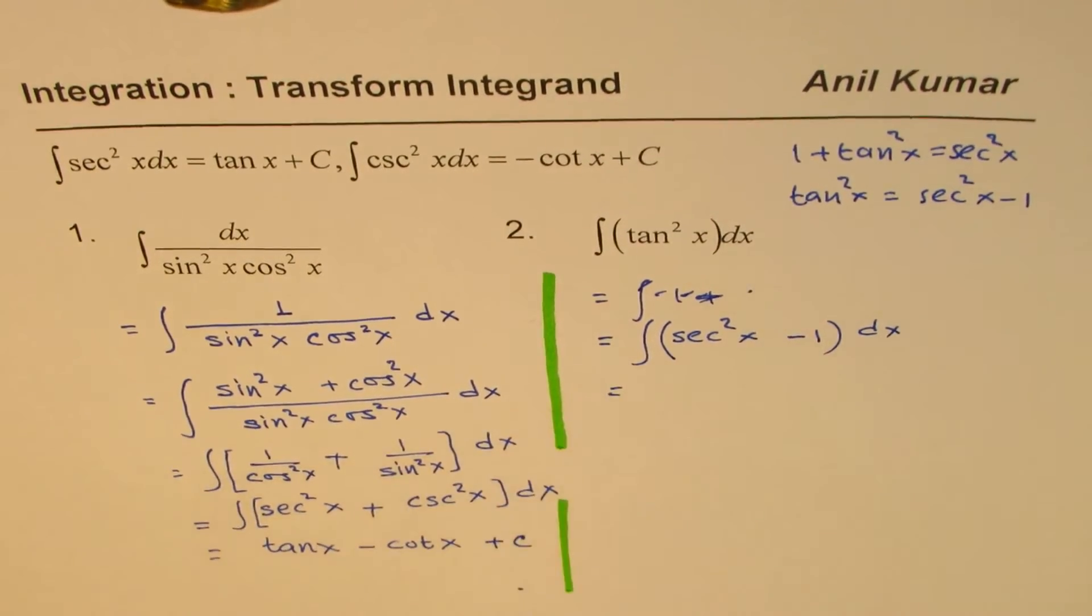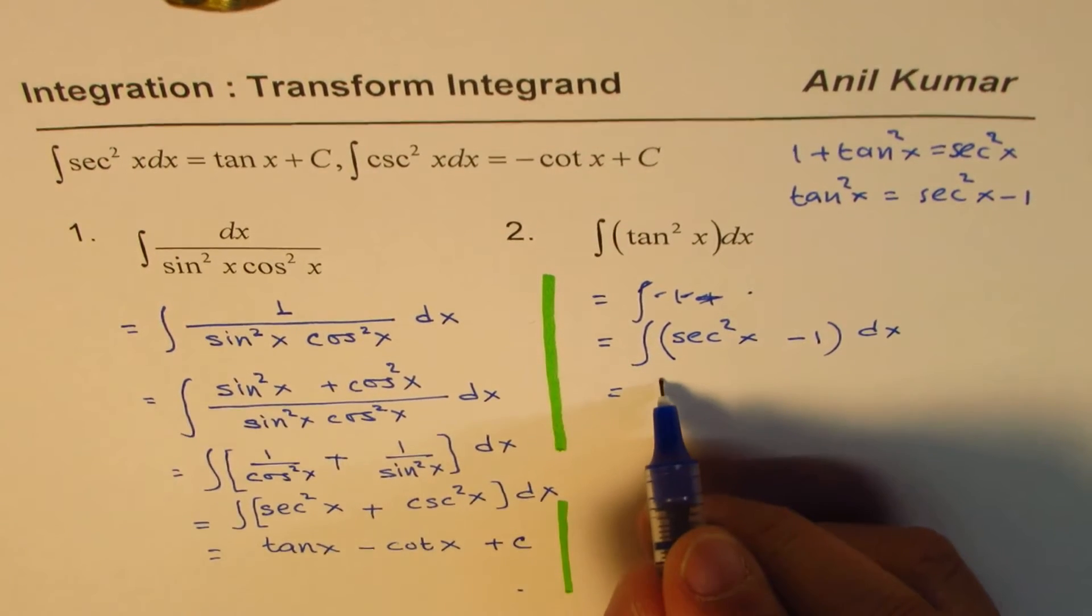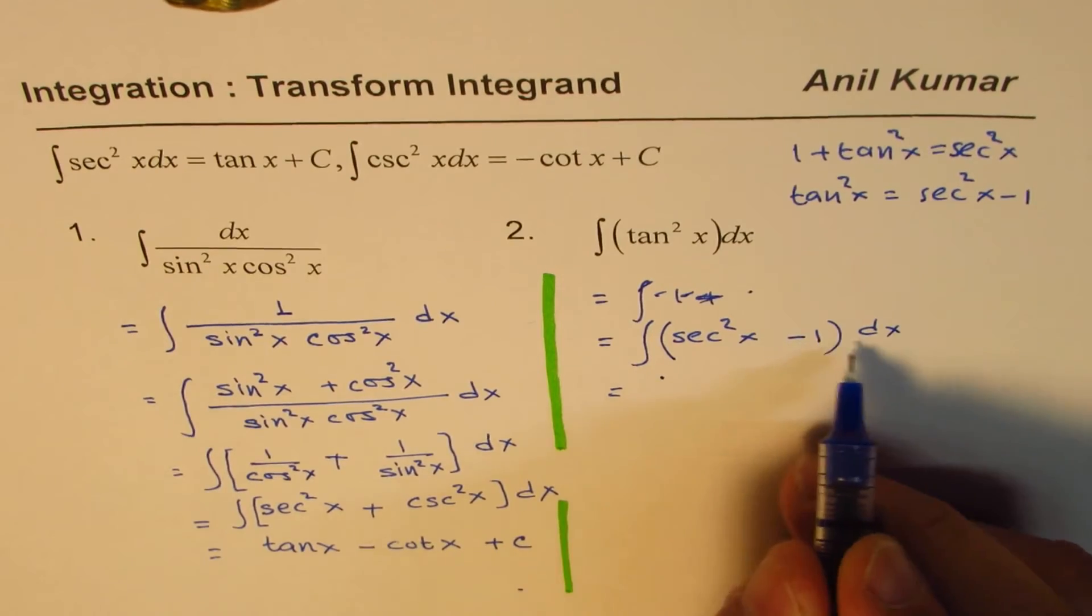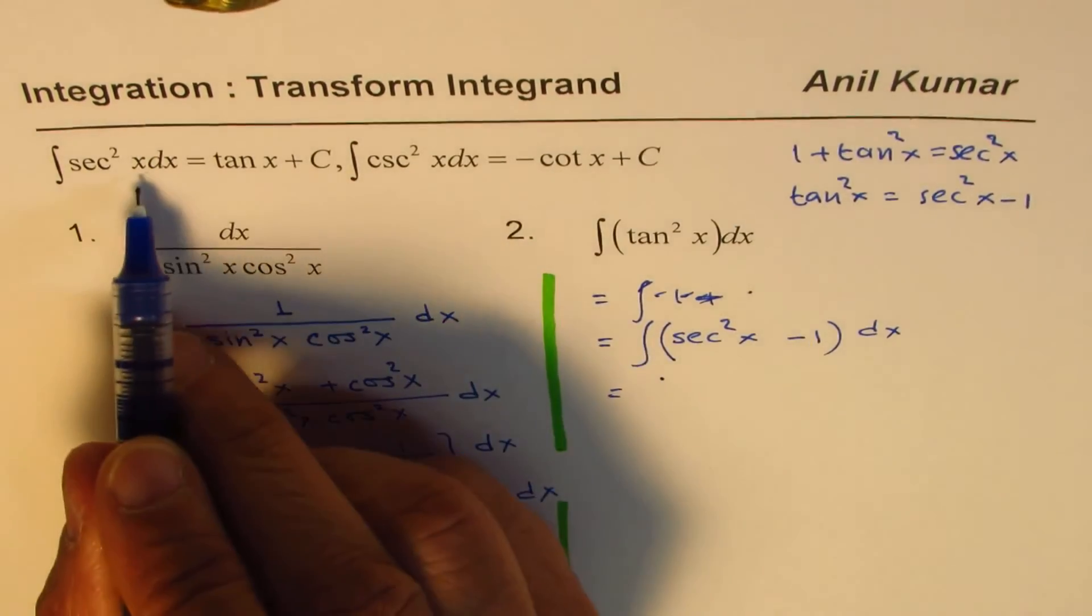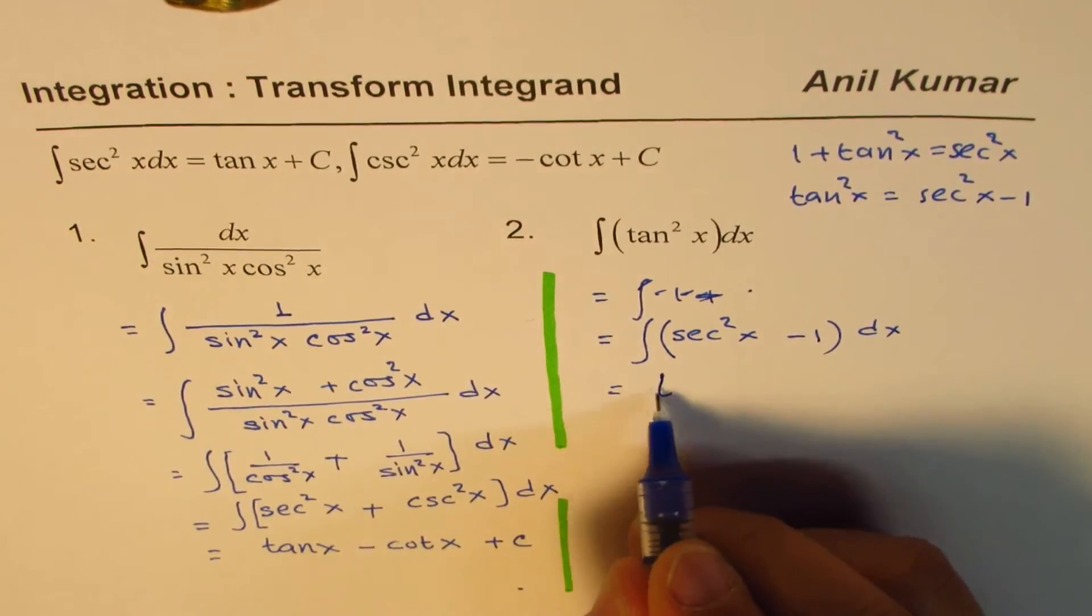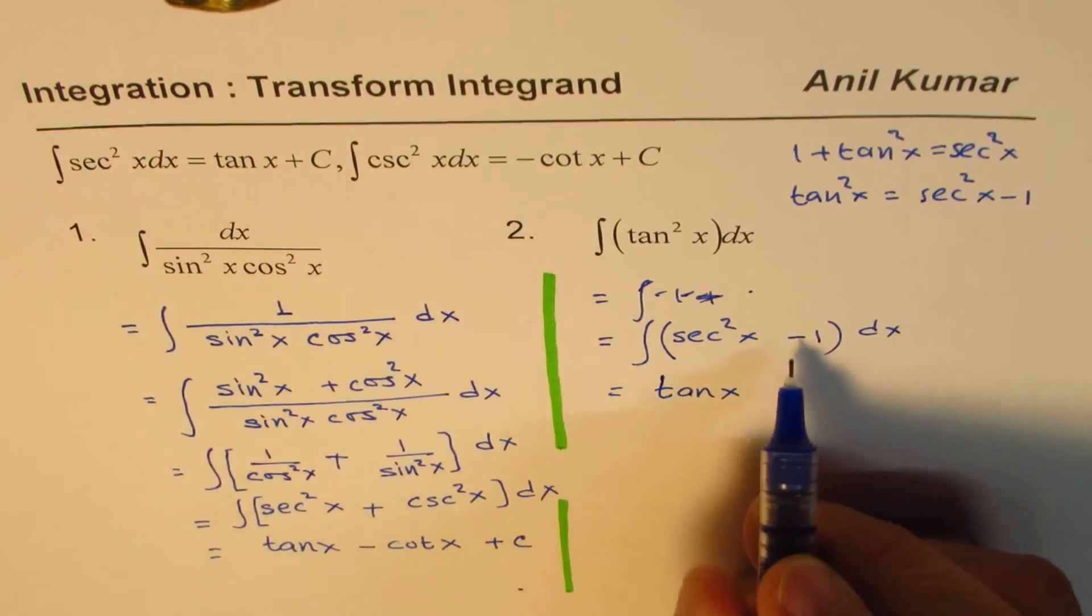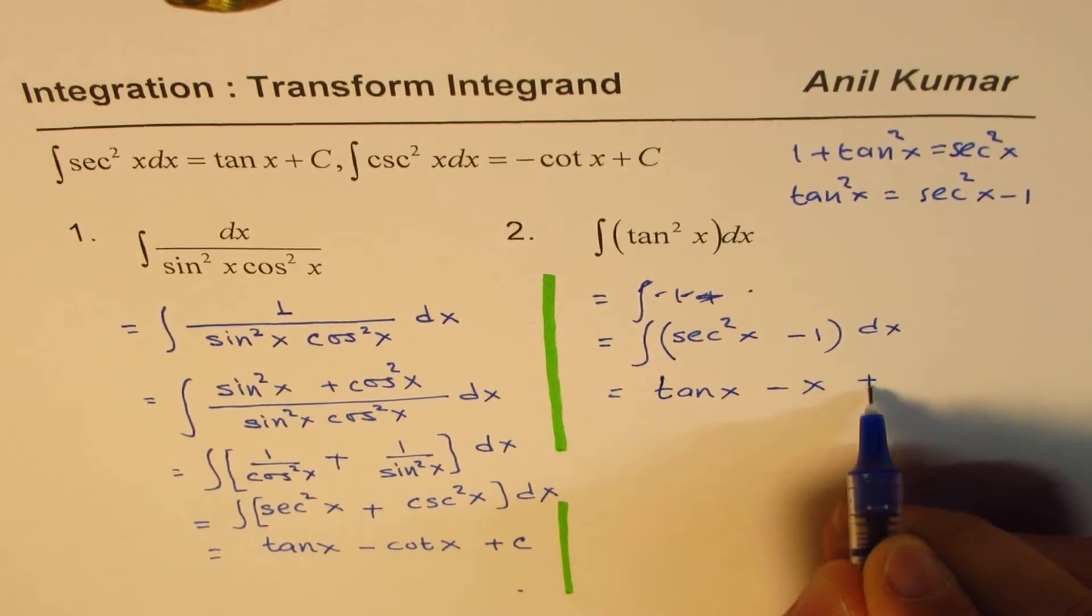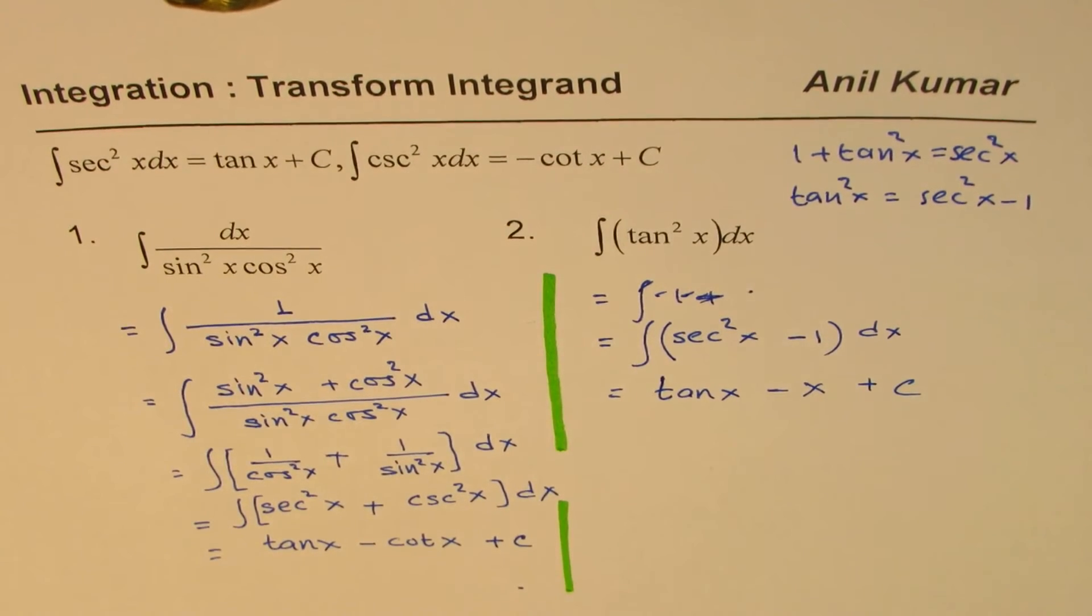And then we can apply the formula. So it could be written integral of secant square x and then minus 1. So integral of secant square x is tan x. This is tan x. And integral of 1 is x plus c. So we get our answer straight.